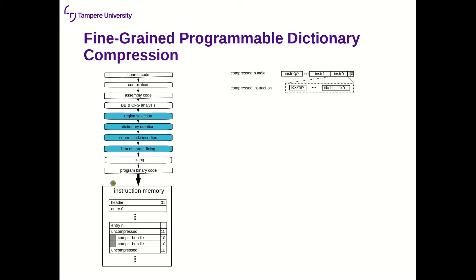When the compressed image is loaded into the instruction memory, it looks like this. We have headers which tell how many entries are followed by them, to be programmed into the dictionaries. After the entries, we are free to interleave uncompressed and compressed code. A compressed bundle is simply a number of instructions fixed at design time, and each instruction merely consists of indices into all of the dictionaries.